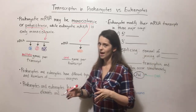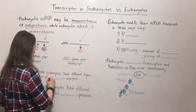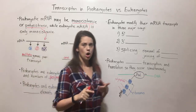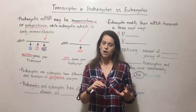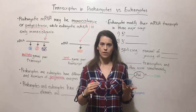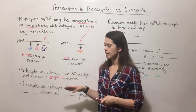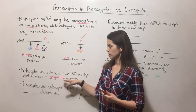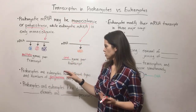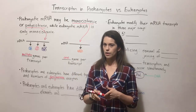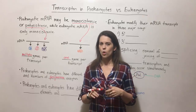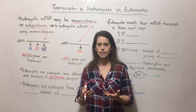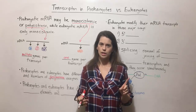Prokaryotes and eukaryotes also have different types and numbers of RNA polymerase enzymes. RNA polymerases are the main enzymes of the transcription process. Prokaryotes have one RNA polymerase, and it only works when it has a cofactor-like molecule called sigma. Different sigmas can make that one RNA polymerase transcribe different genes.